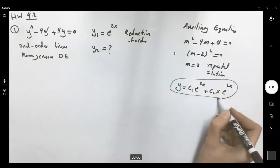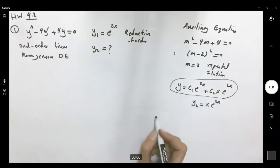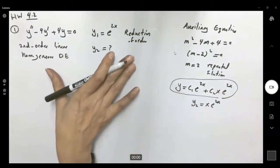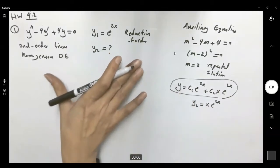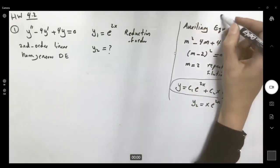So we already know that y2 is equal to x e to 2x. We can use this to double check that our final answer is correct or not.